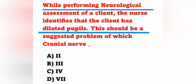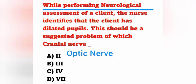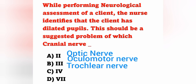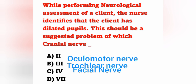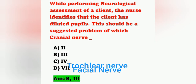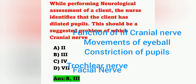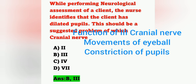Next question: While performing neurological assessment, the nurse identifies that the client has dilated pupils. This suggests a problem with which cranial nerve? Options: option A, second cranial nerve; option B, third cranial nerve; option C, fourth cranial nerve; option D, seventh cranial nerve. The second cranial nerve is the optic nerve, the third is the oculomotor nerve, the fourth is the trochlear nerve, and the seventh is the facial nerve. The answer is option B — the third cranial nerve. The oculomotor nerve's function is movement of the eyeball and constriction of the pupils, so impaired oculomotor function leads to dilated pupils.